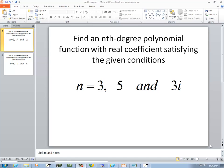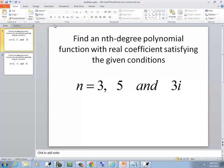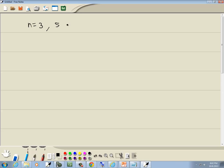In this problem, we want to find an nth degree polynomial function with real coefficients satisfying the given conditions. They're telling us n equals 3, and we're given 5 and 3i.